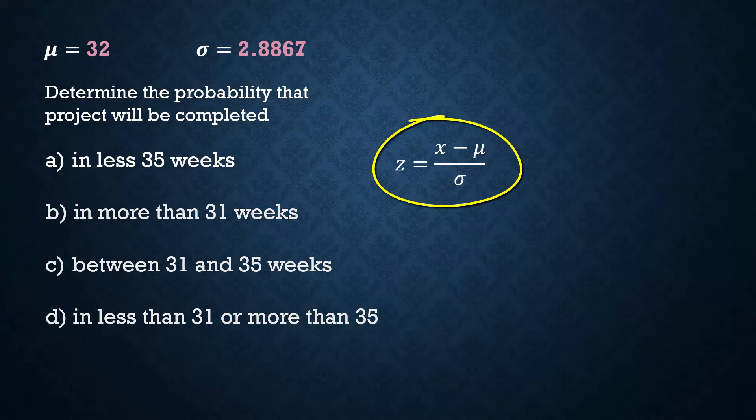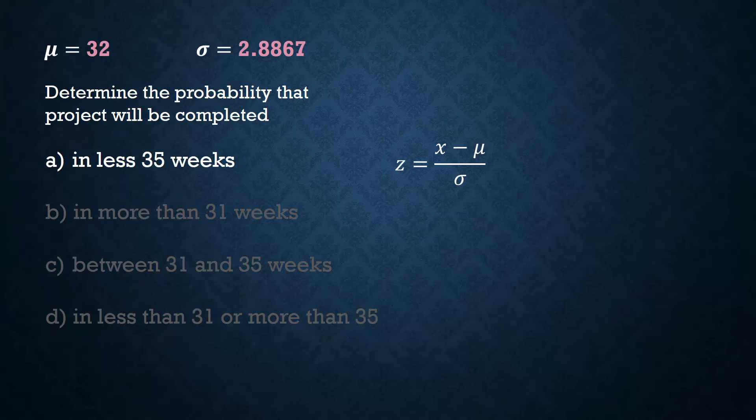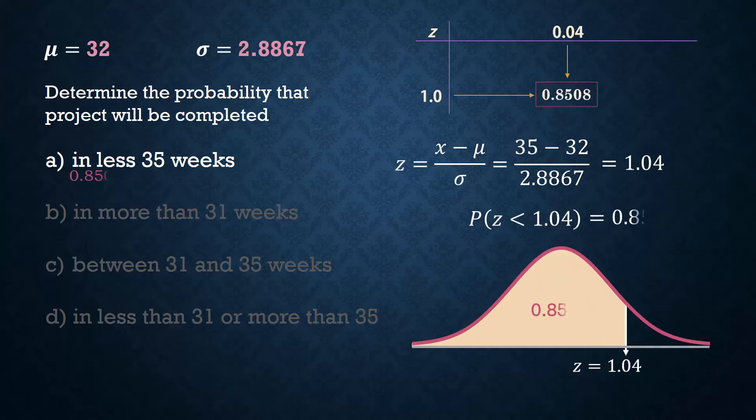First, we find the probability that the project will be completed within 35 weeks. That is, x equals 35. And that gives z equals 1.04. And looking it up in the tables, we have a less than area of 0.8508.